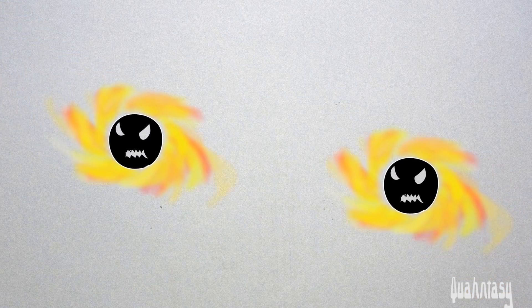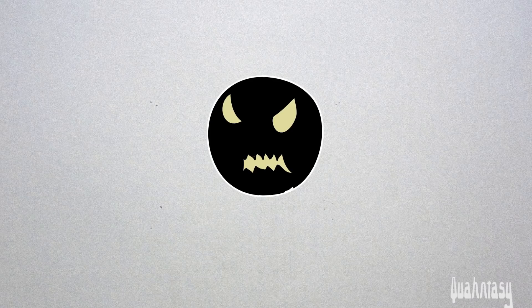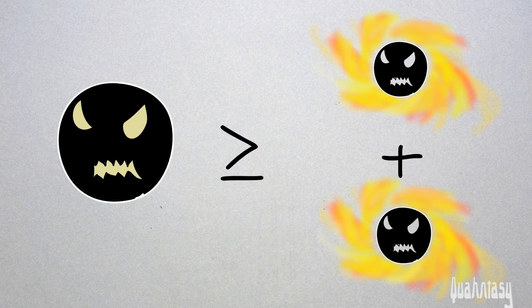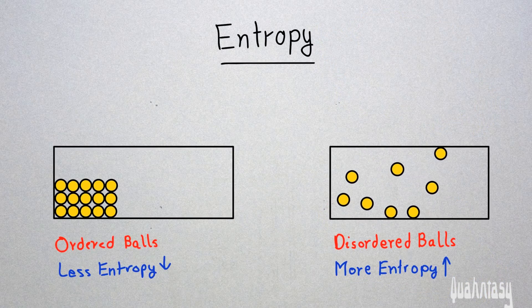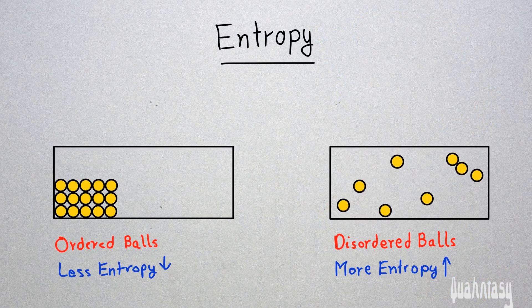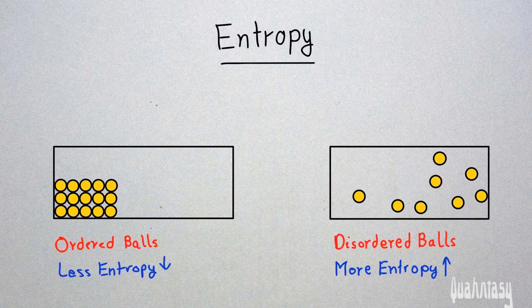If two black holes collided and merged together, the area of the final black hole would be greater than or equal to the sum of the areas of the original black holes. Now, entropy measures the degree of disorder of the system. Disorder tends to increase if things are left to themselves.